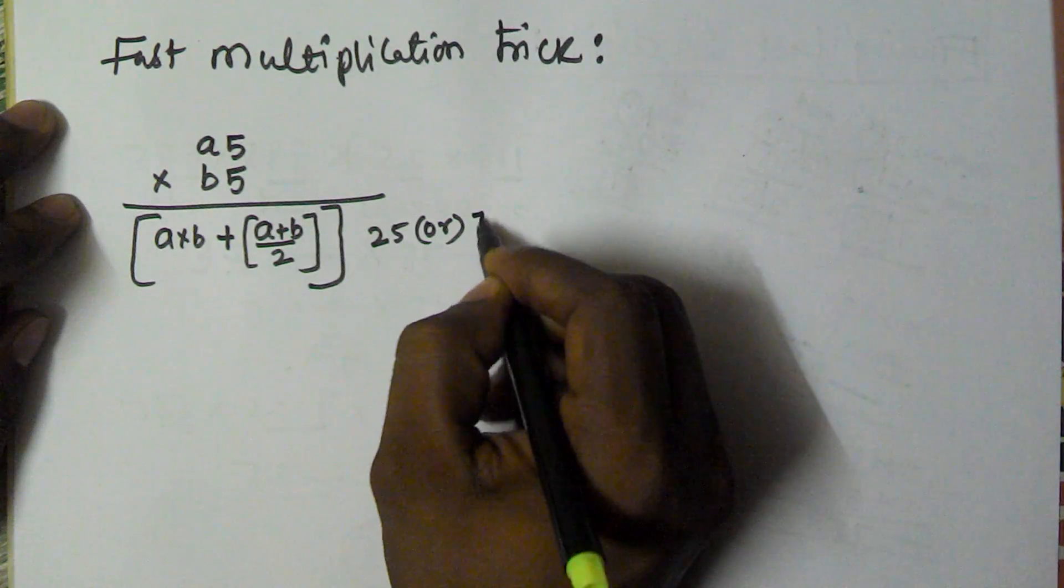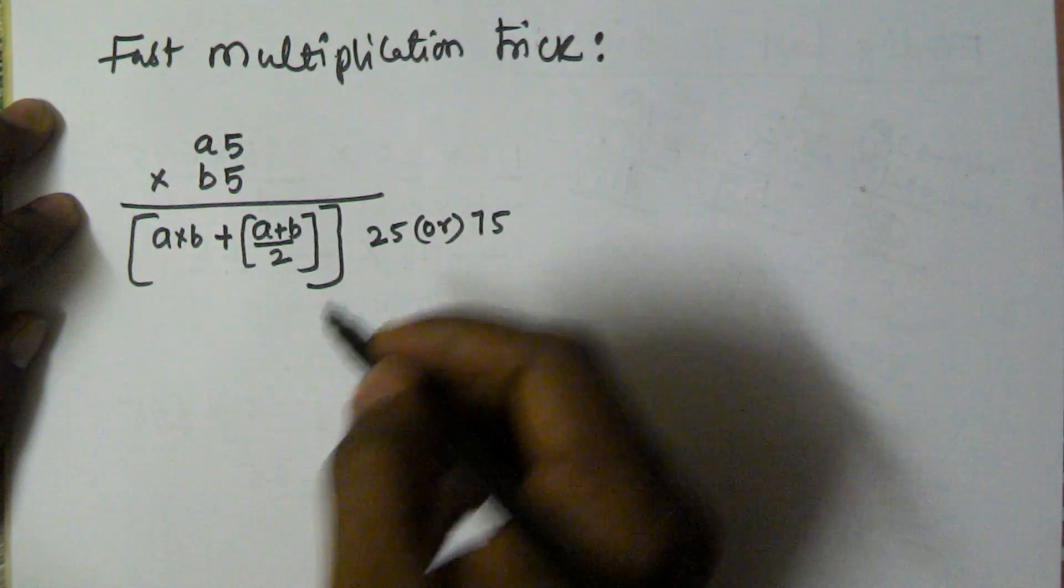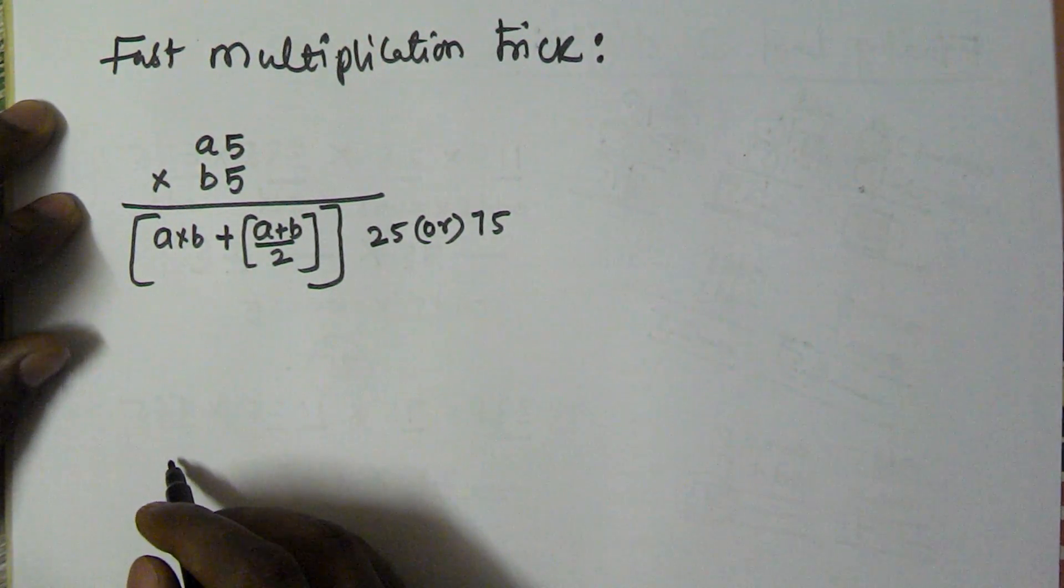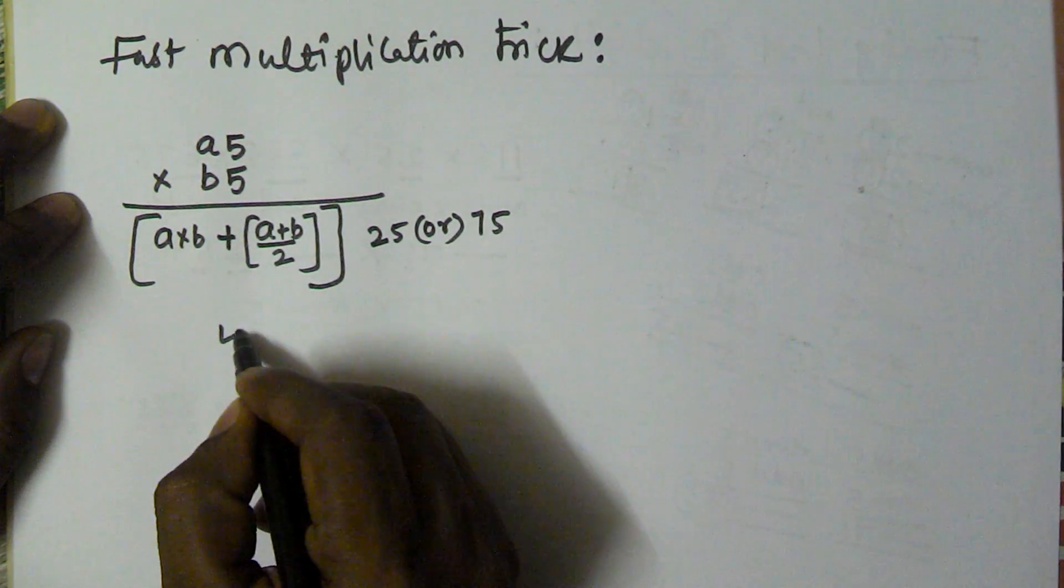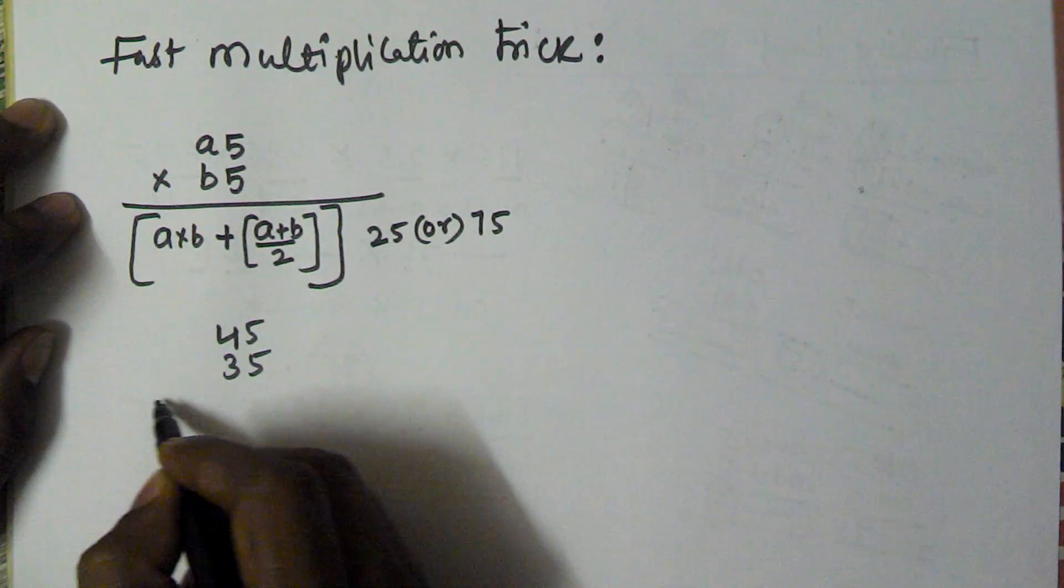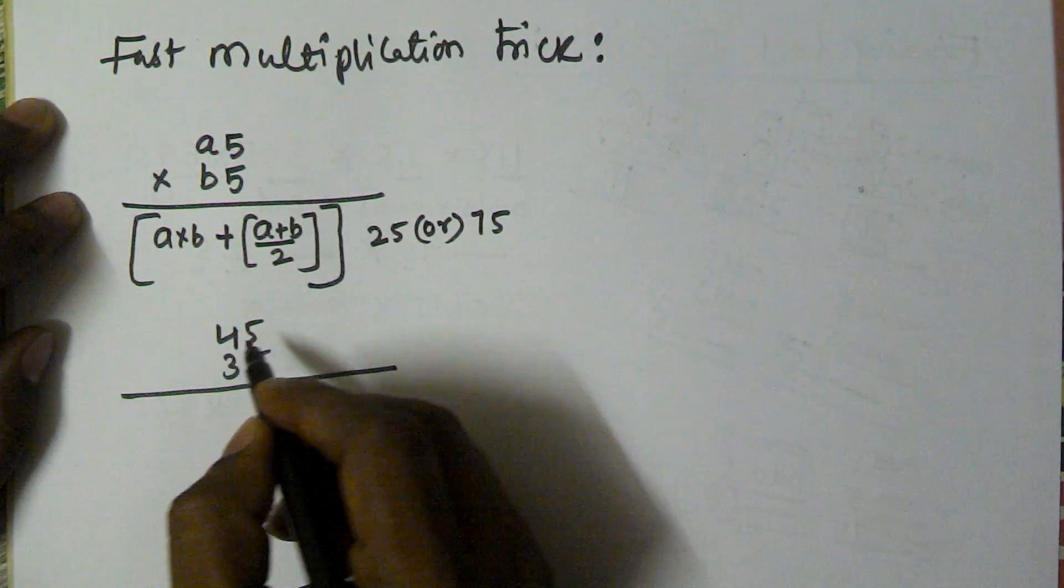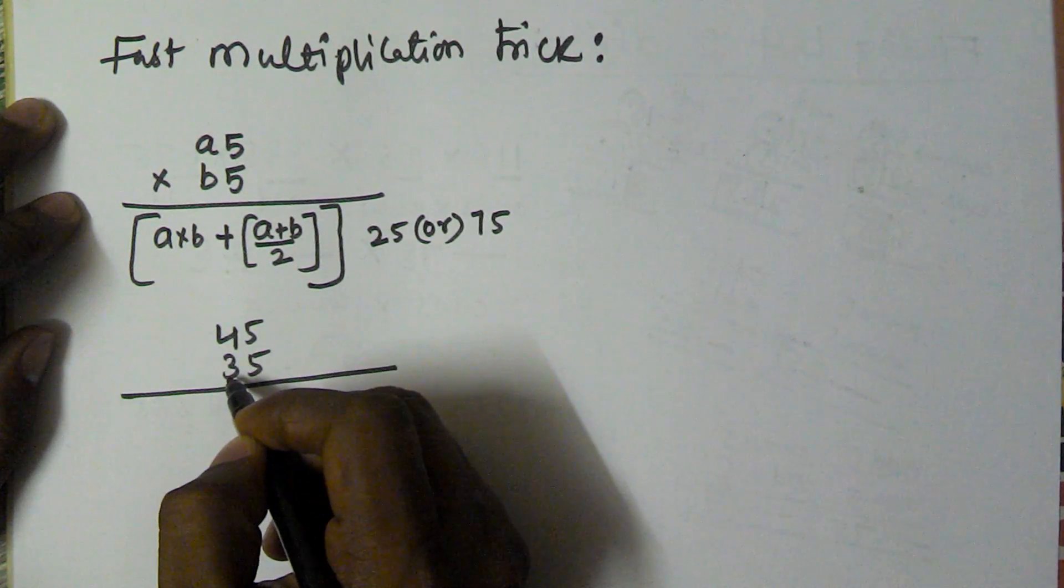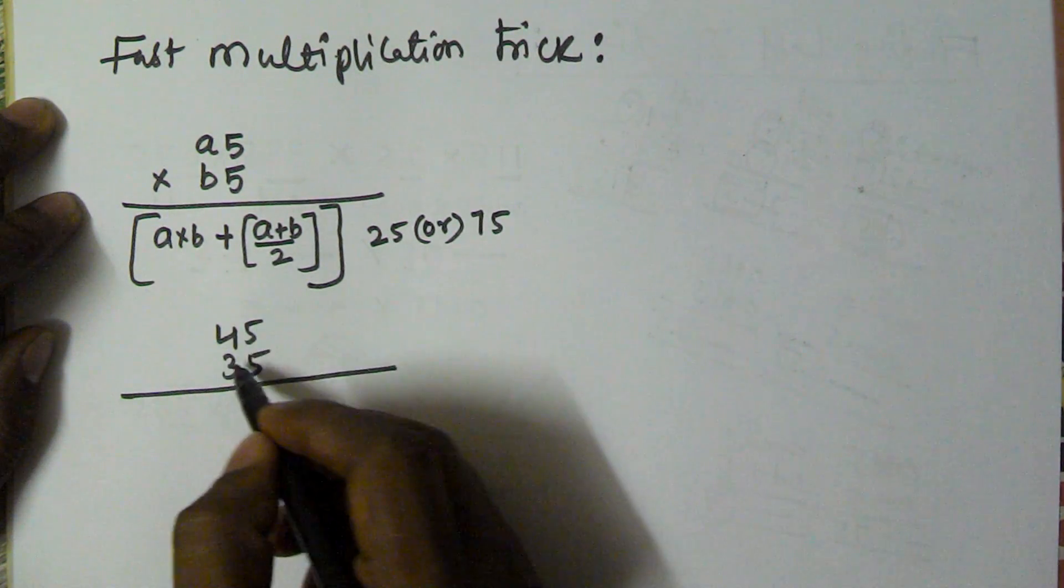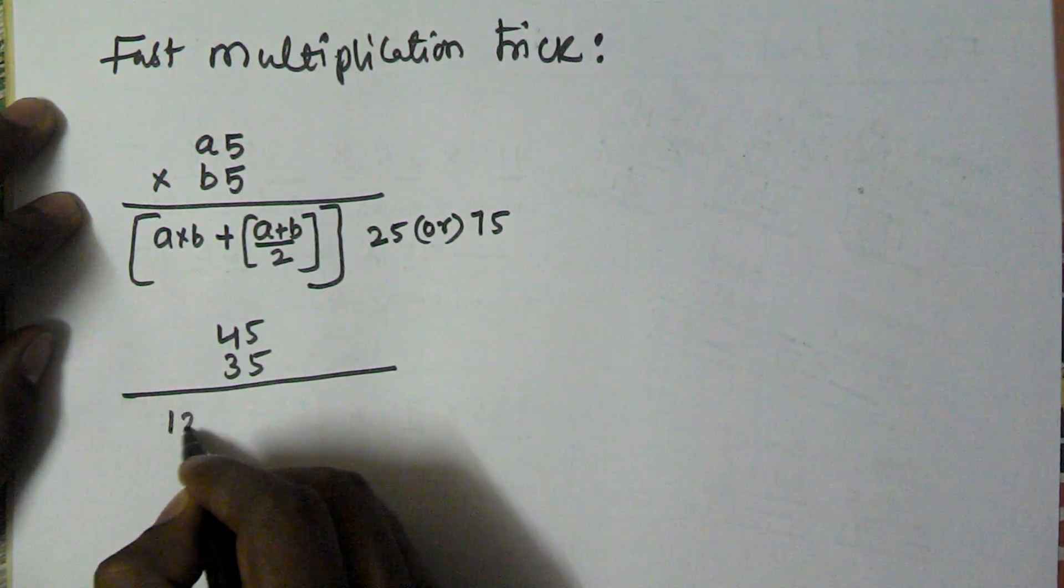Now we'll see one example of this. Let's try 45 into 35. Here a is 4 and b is 3, so a into b, 4 into 3 is 12, plus a plus b, 4 plus 3 by 2.